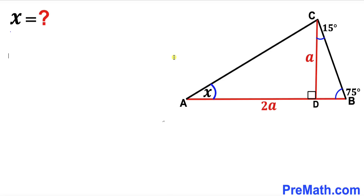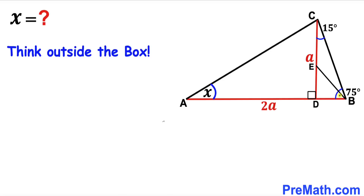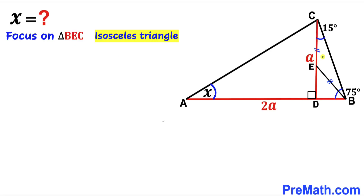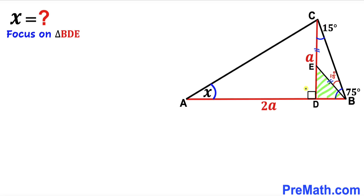We are going to think outside the box. We connect point B with a point E on line CD such that segment BE equals segment CE. This gives us triangle BEC, which is an isosceles triangle since those two side lengths are equal. Therefore the base angles are congruent: if angle BCD is 15 degrees, then angle CBE is 15 degrees as well. Now let's focus on right triangle BDE.